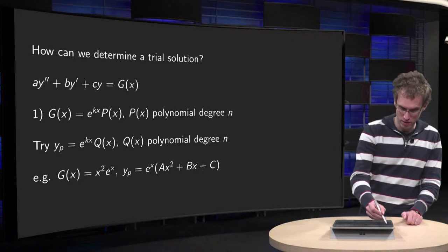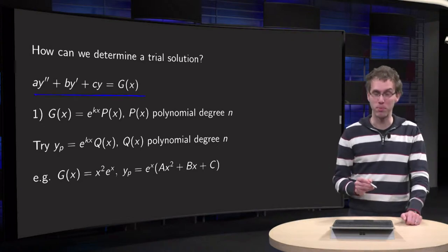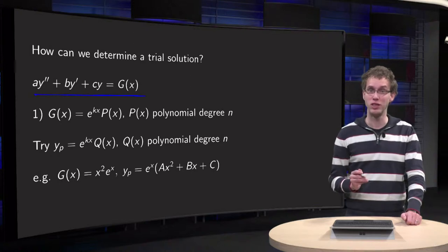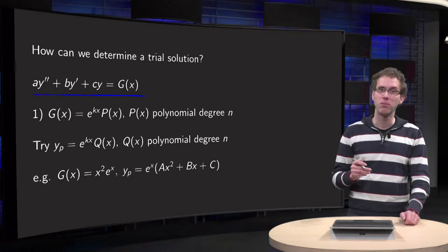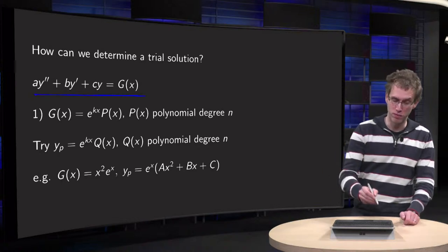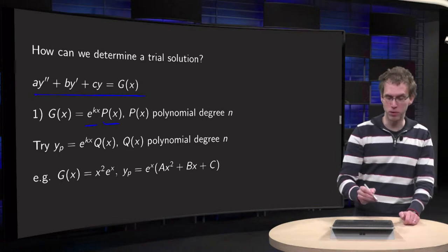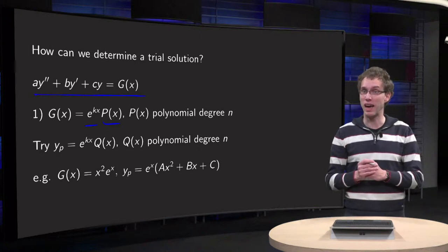We have an equation of the form a times y double prime plus b times y prime plus c times y equals g of x, where g of x is the right-hand side. Suppose now that your g of x is of the form e to the power kx times a polynomial, p of x, a polynomial of degree n.